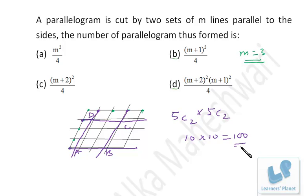Okay, now when m was 3, my answer is 100. Now you can use the options. You just put the value of m in the options, and wherever you are getting the answer as 100, that will be the correct choice.